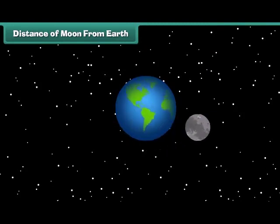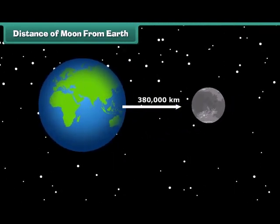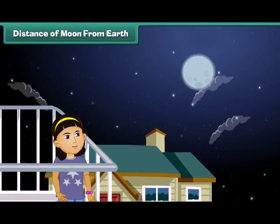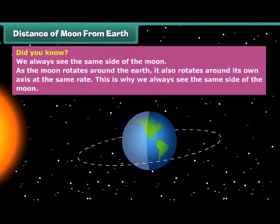Moon is an average of about 380,000 km from Earth, which is pretty close. Because of its proximity we don't need telescope to see features on the moon's surface from Earth. Did you know we always see the same side of the moon? As the moon rotates around the earth it also rotates around its own axis at the same rate. This is why we always see the same side of the moon.